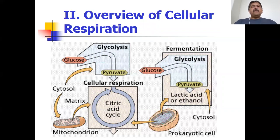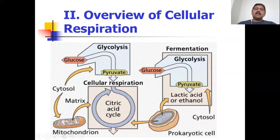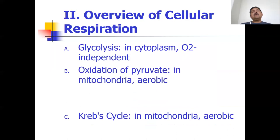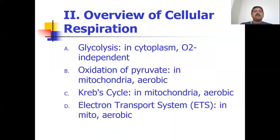I'm going to give you an overview of cellular respiration, then go through each of the steps in detail. We'll look at glycolysis, fermentation, the oxidation of pyruvate, the citric acid cycle or Krebs cycle, and then the electron transport system. So there are four different steps of cellular respiration, and we have multiple slides for each.